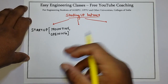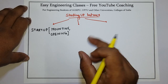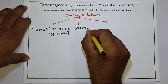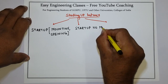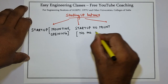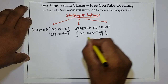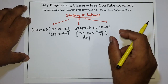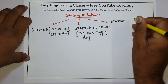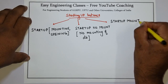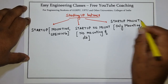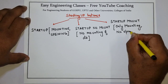If we want just the instance to start but the database should not be mounted, then we can write startup NOMOUNT. In this case, there is no mounting and no opening of the database. But if we want to just mount the database without opening it, then we can use startup MOUNT, which means only mounting of the database with no opening.